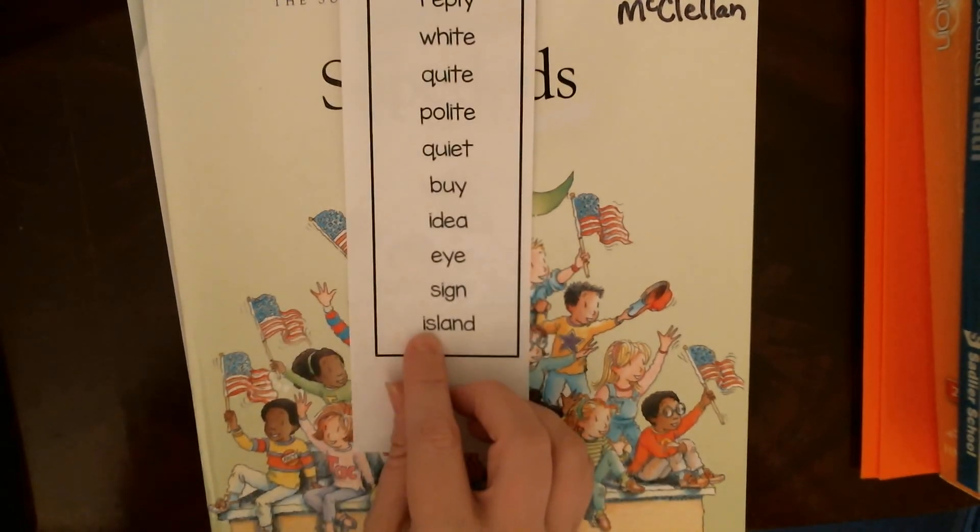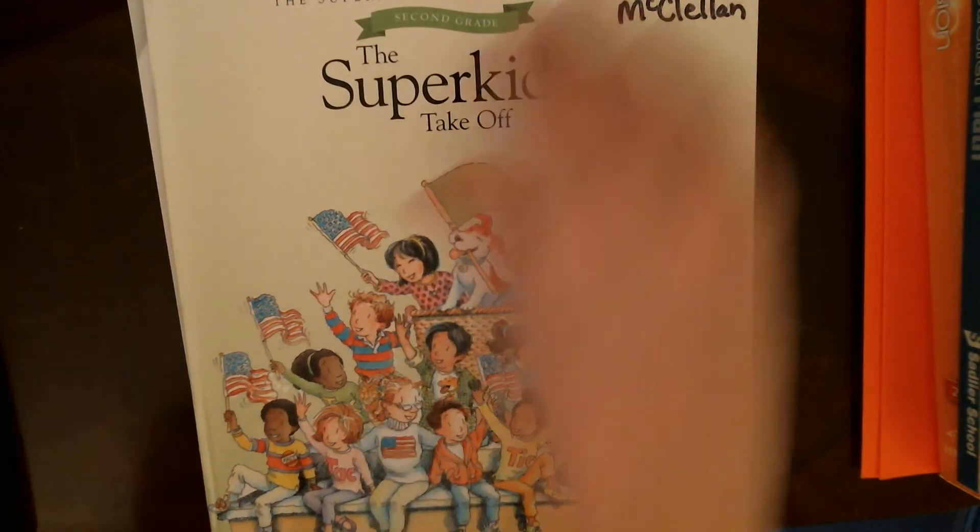And then this one is the word island. We learned about islands when we studied our landforms. And that is a silent S. It looks like is land, is land, but it's island.